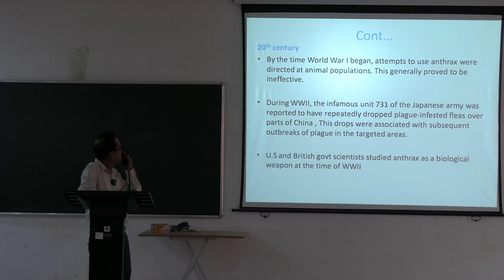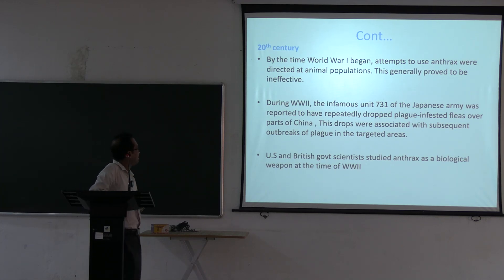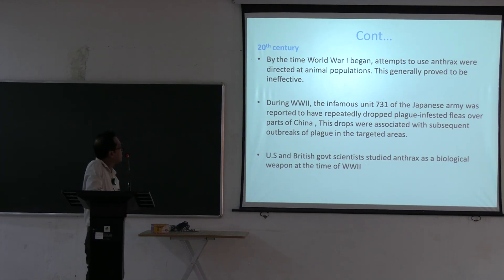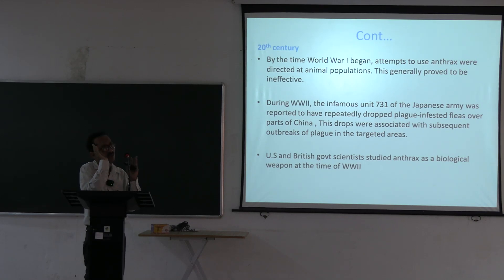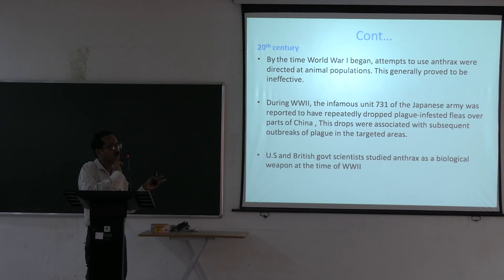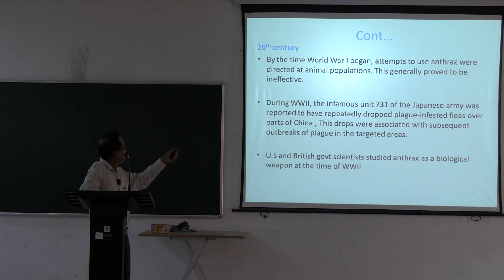Smallpox was spread via contaminated blankets used by the British against Native American populations in 1767. In the 20th century during World War I, anthrax was used in attempts to infiltrate animal populations, though it proved to be generally ineffective.